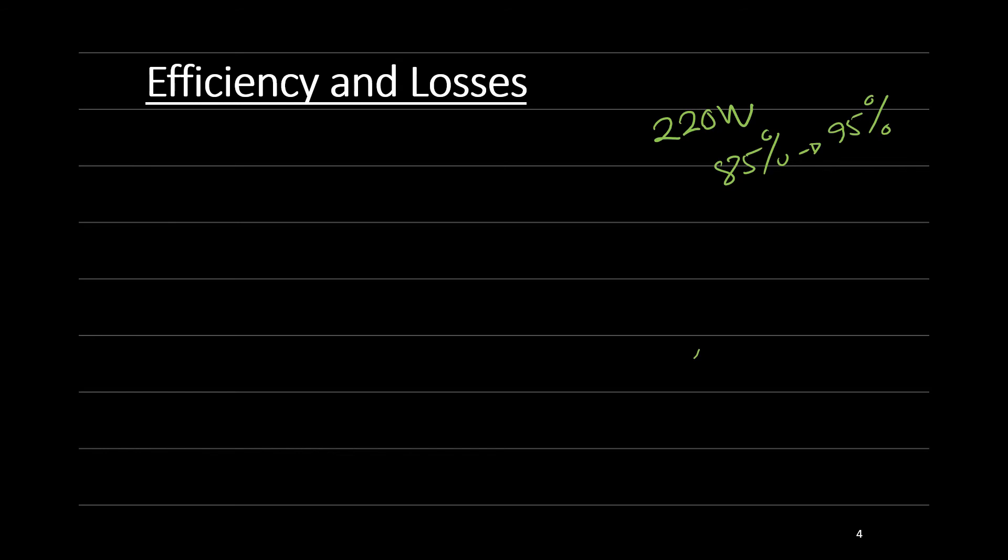The first one comes with efficiency 85 percent efficiency and the other one has a better efficiency which is 95 percent efficiency. And we need to compare these two converters if both have the same losses. So here both lose the same amount of power which is 220 watt.